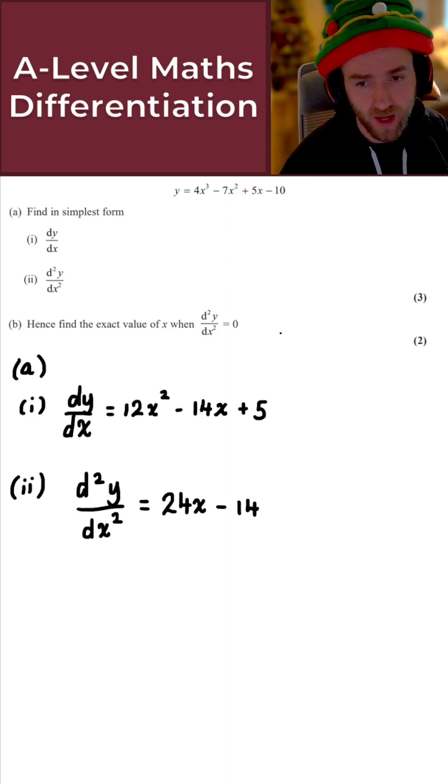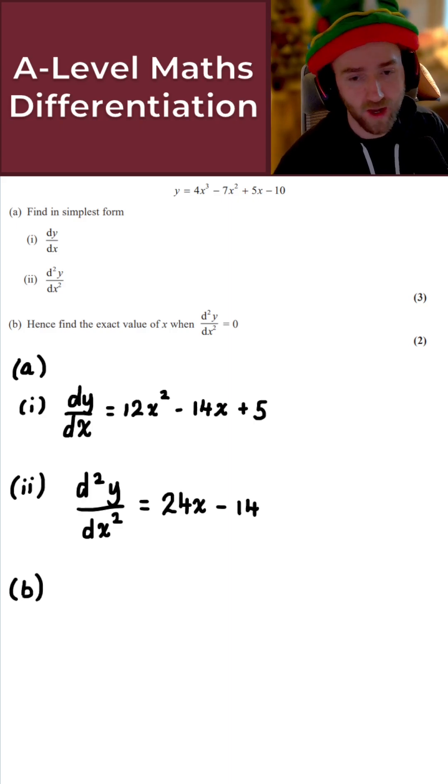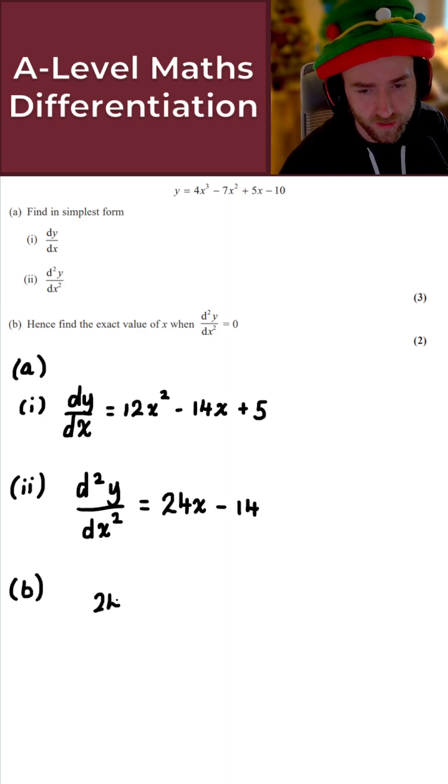And then finally, for the very last part of this question, part b, it says hence find the exact value of x when the second derivative here is equal to 0. So for b, all we're going to do here is just take the result that we got for the second derivative and just set that equal to 0. Just solve. All very straightforward here. So I get 24x minus 14 is equal to 0.